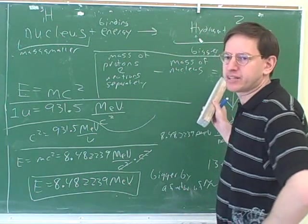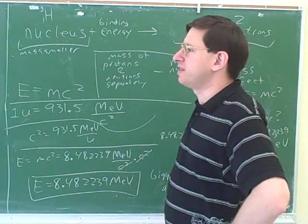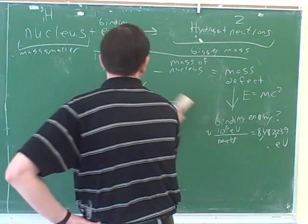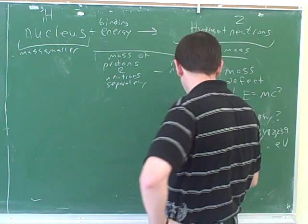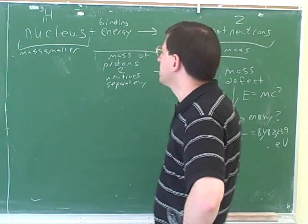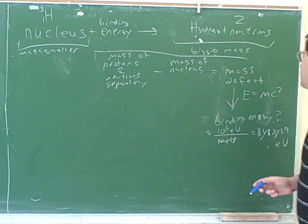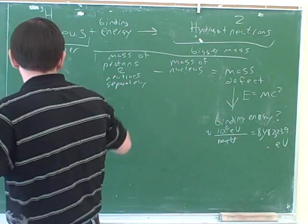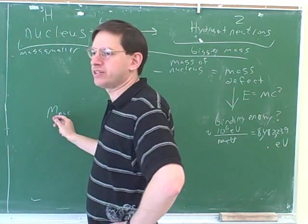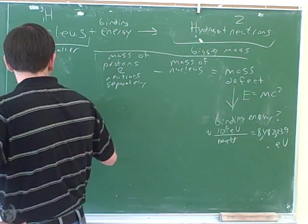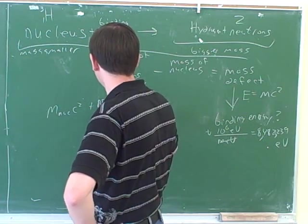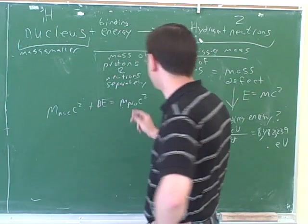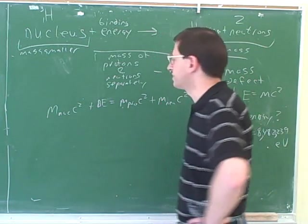What we did is, first we found the mass defect, and then we used that to find the binding energy. That equation is a way that you can find the binding energy in one step. Basically the way we approached this is we started by just focusing on the masses, and we found the mass defect, and then we turned the mass defect into an energy. But the way they're doing it is they're turning all the masses into energies from the start. So they take the mass of the nucleus, and they turn that into its equivalent energy from the start. What's its equivalent energy? That would be mc squared. And then they have the binding energy. And then they take the mass of the protons and turn that into an energy. And then they take the mass of the neutrons, and turn that into an energy.